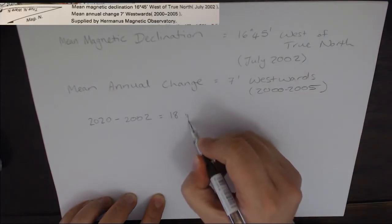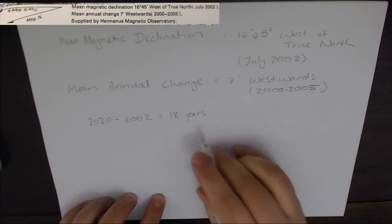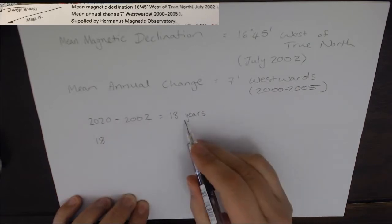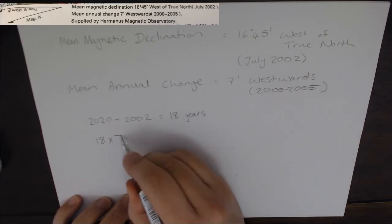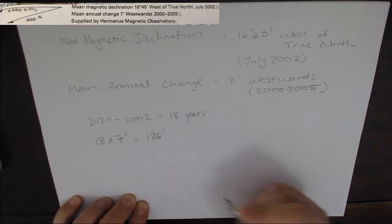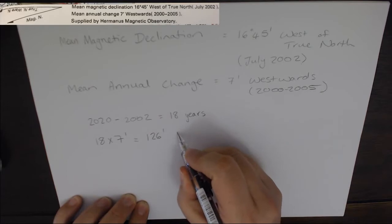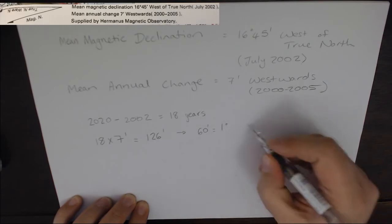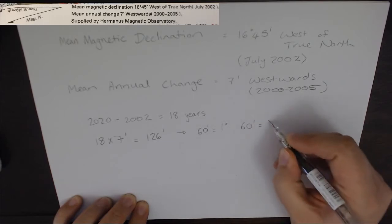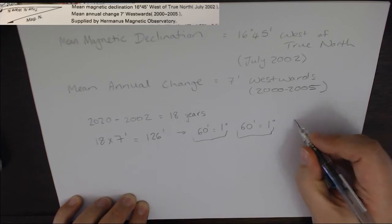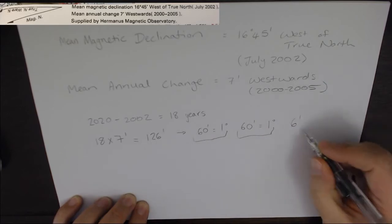Subtract 2002 and we have an 18 year difference. With that 18, we are now going to multiply that by our 7 minutes westward, which is our annual change. So 18 years times 7 minutes per year gives us 126 minutes. But we don't talk about anything over 59 minutes, so 60 minutes gives us 1 degree and another 60 minutes gives us another degree. If we add those two together we get 120 minutes, so we have 6 minutes left over.